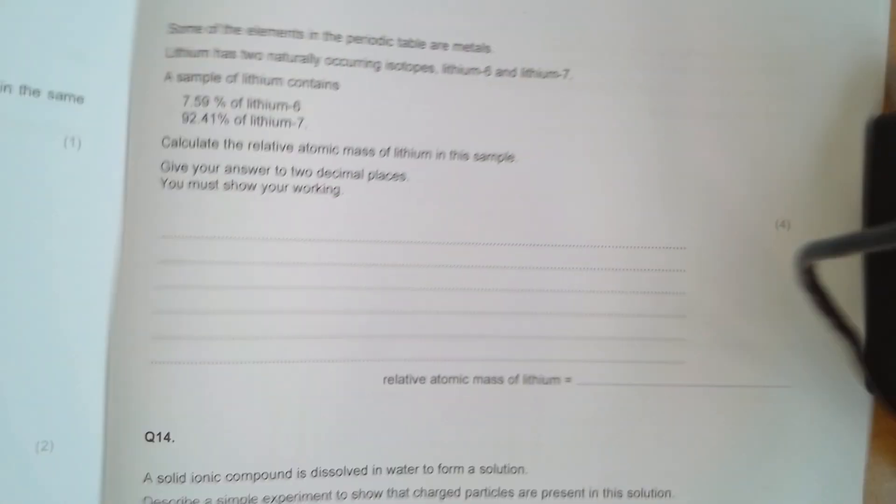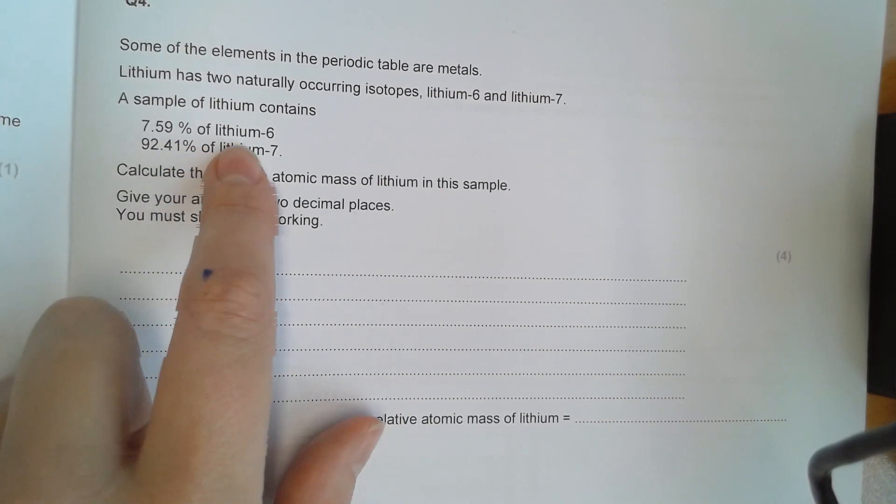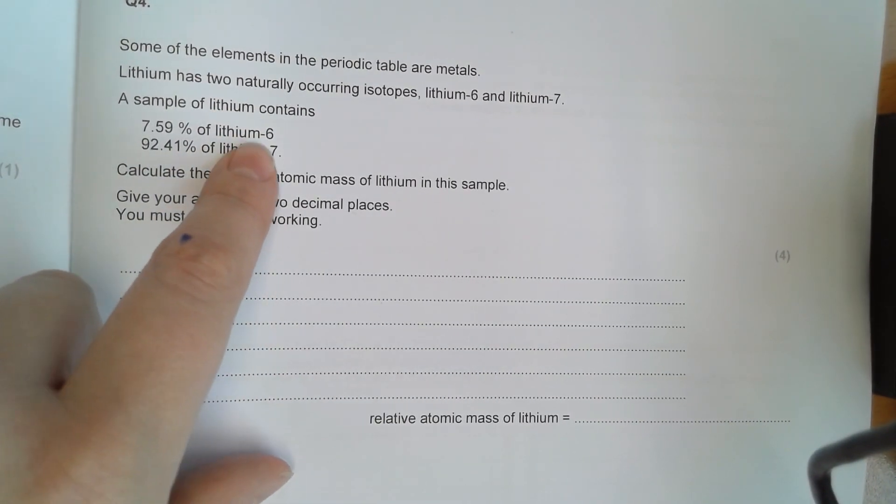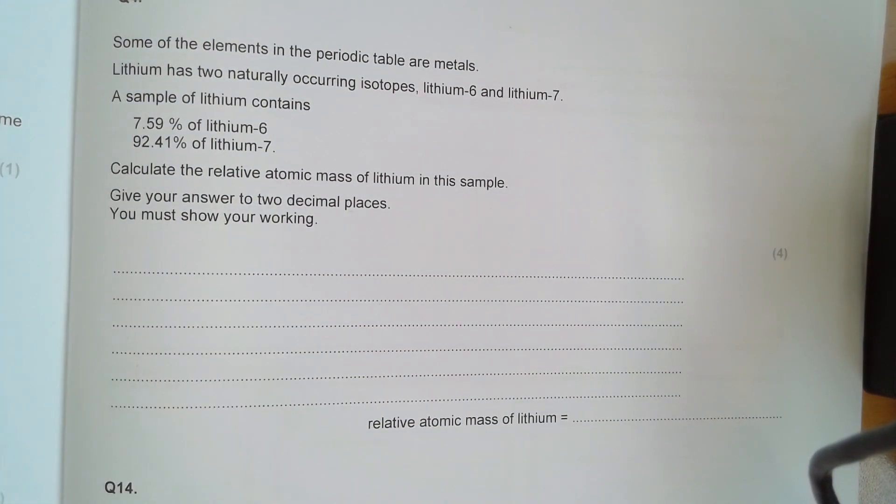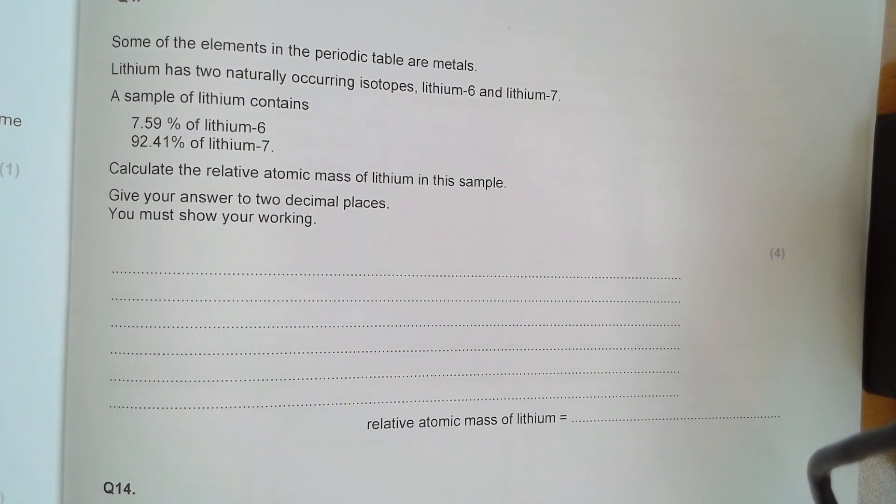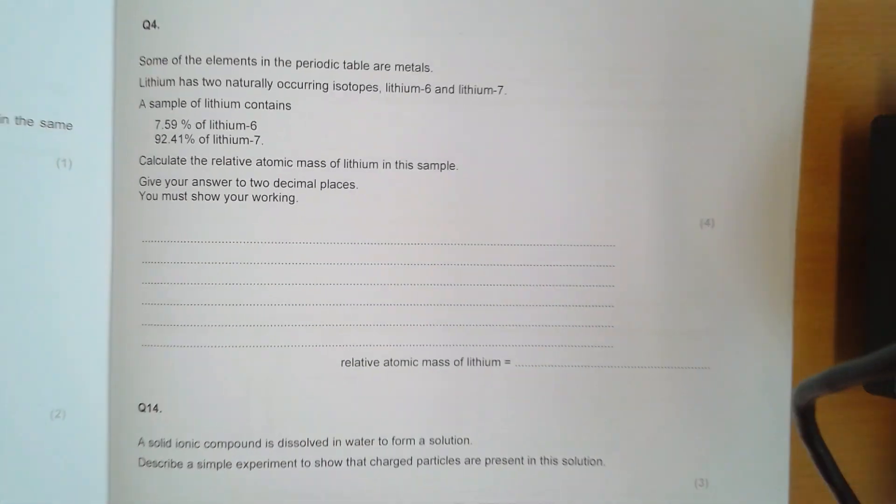The only other one, oh sorry, just to note on this one, this is just a relative atomic mass calculation, but sometimes students get confused with that dash and think it's a minus. These numbers refer to mass. Mass cannot be minus. It's literally just a dash. So just don't be put off by that.